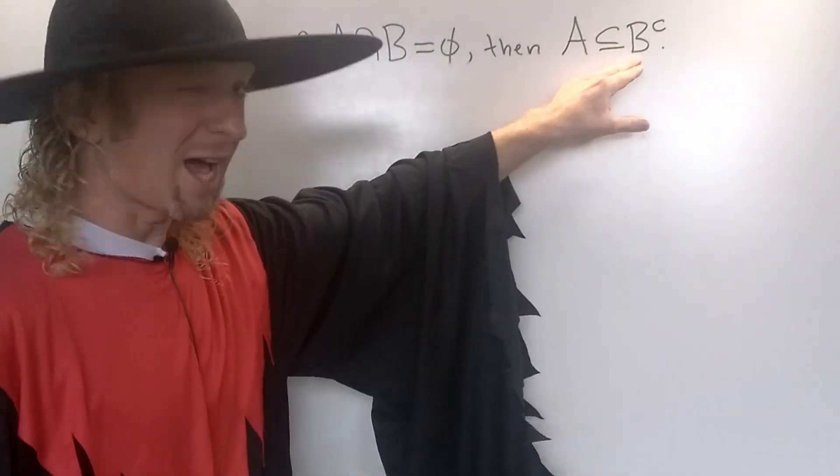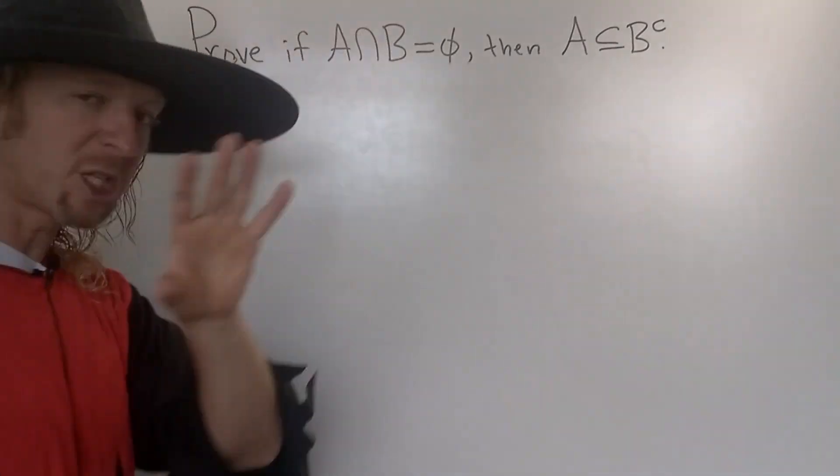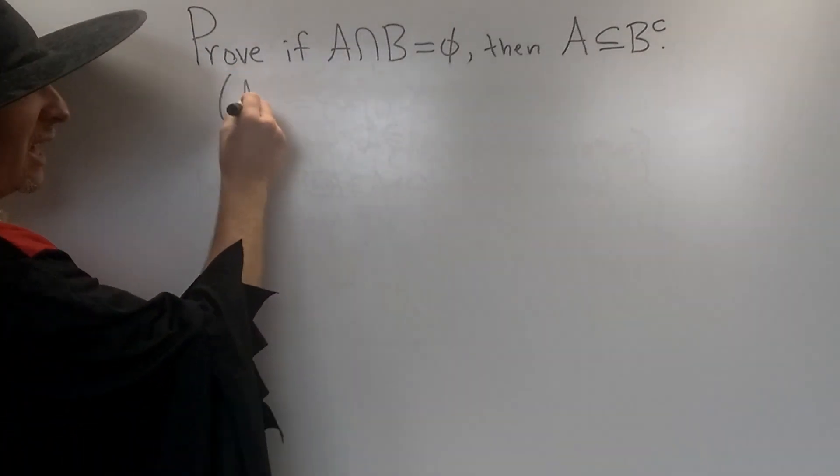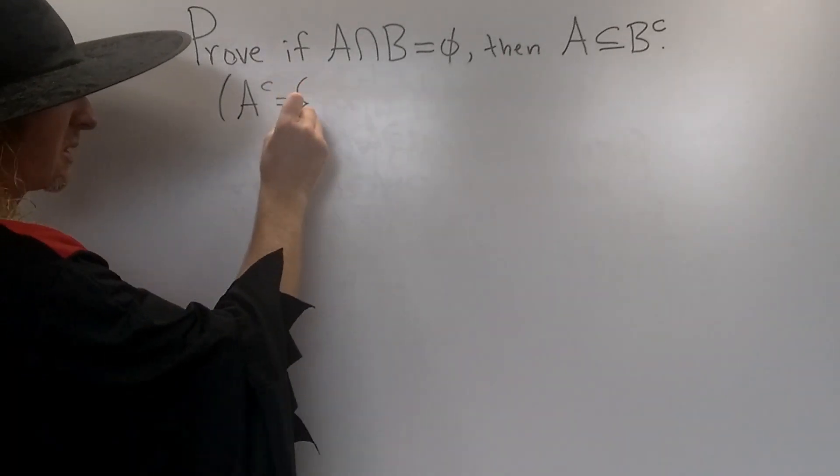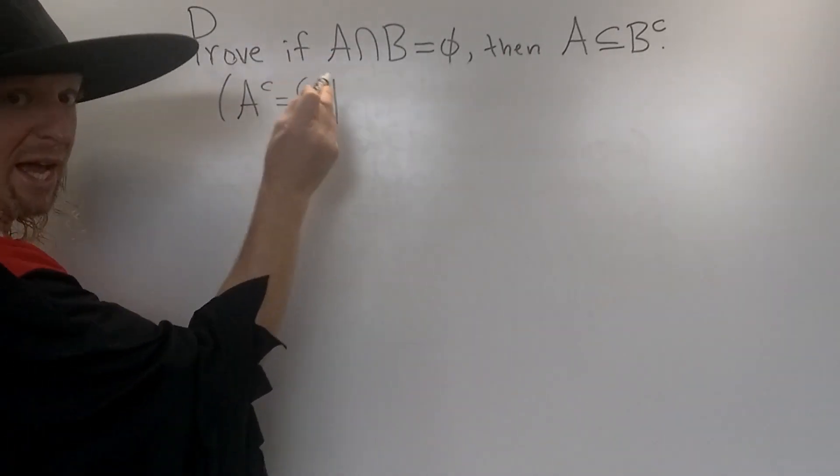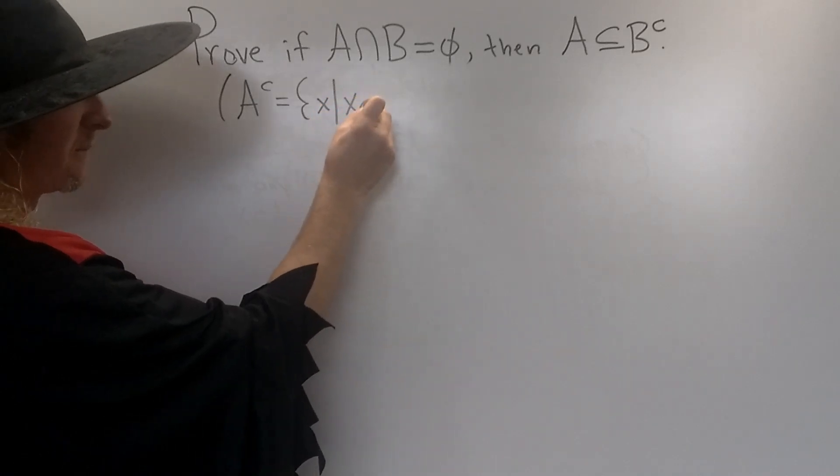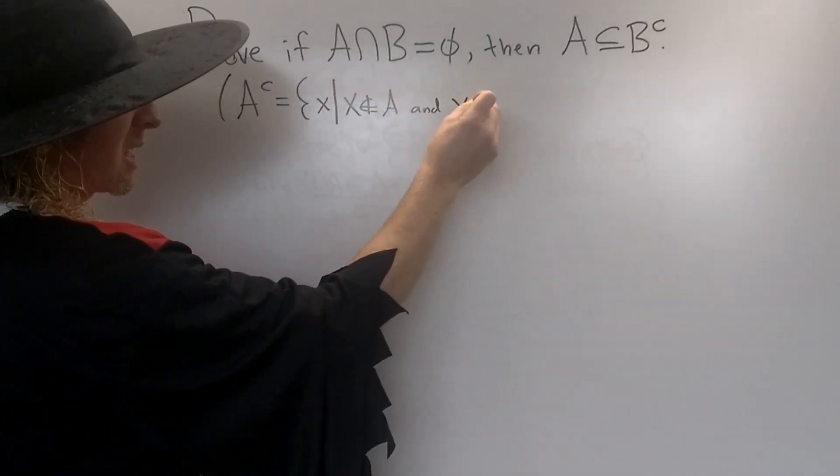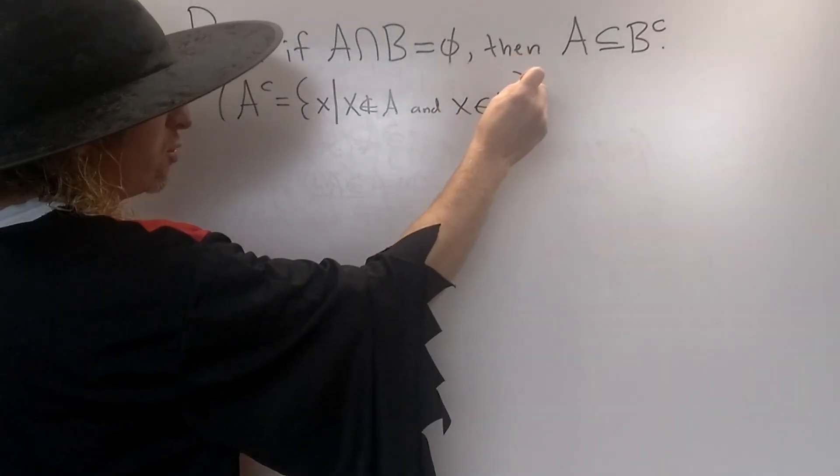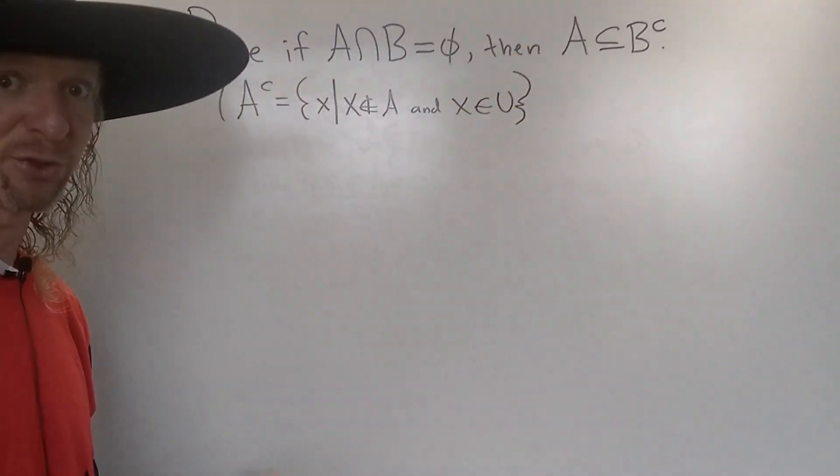This is called the absolute complement. Let me explain what that is before we do the proof. Let's pretend we have A complement. This is the set of all x such that x is not in A. If you want to add an extra condition here, you can say that x is in U, where U is your universal set.